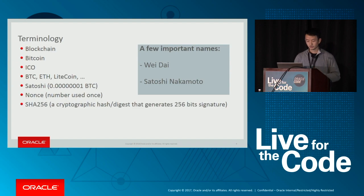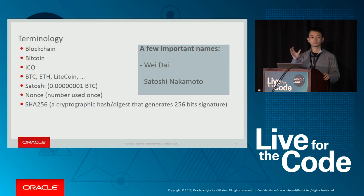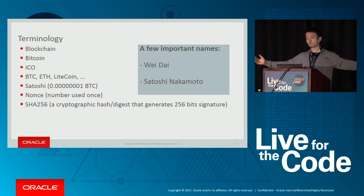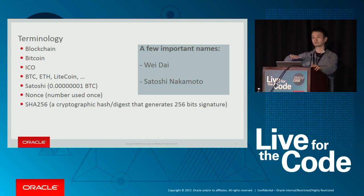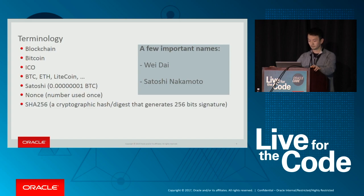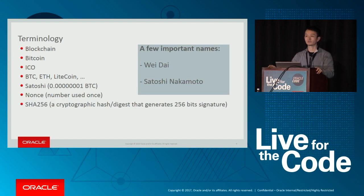A few basic terminology on blockchain. This is actually the easiest concept — it's a chain of blocks. Each block has a few transactions and some hash code. Bitcoin is an application of blockchain technology; it's one of the applications. You're probably familiar with the hype and the price ups and downs recently. There are also initial coin offerings, similar to IPO in the stock market, plus Ethereum, Litecoin, and many other digital currencies.